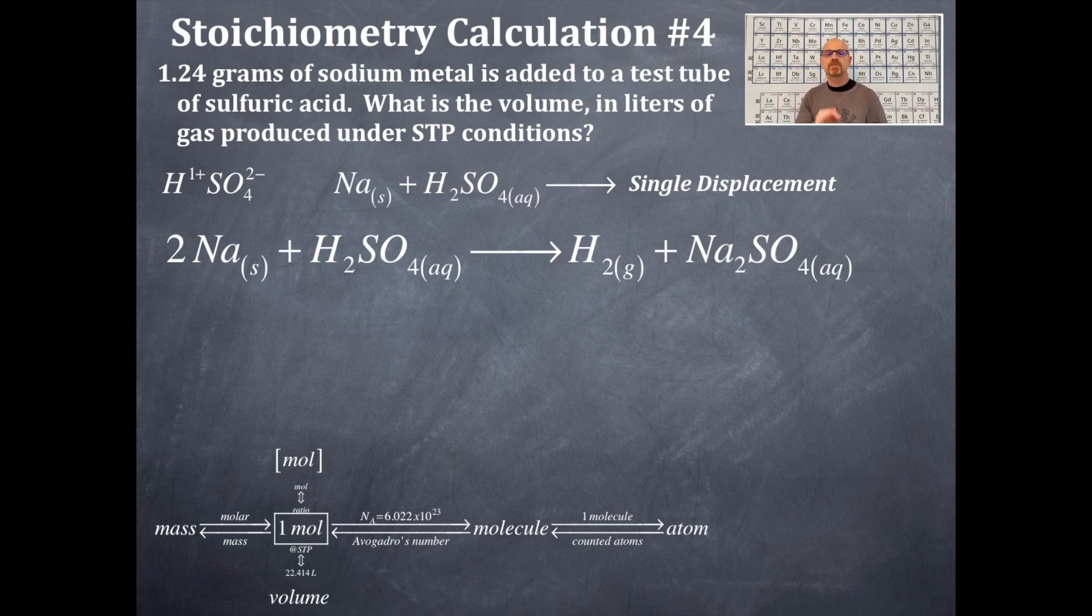So now I need to reread the question and figure out what I actually have. And so I have grams of sodium metal. That's 1.24 grams of sodium metal. And what do I want to get? I'm going to get to a volume in liters of the gas produced. And that is hydrogen gas. So I'm going to go from sodium metal to hydrogen gas.